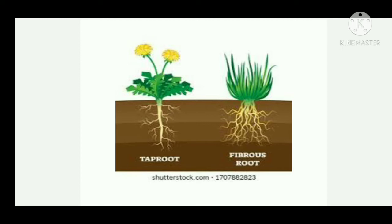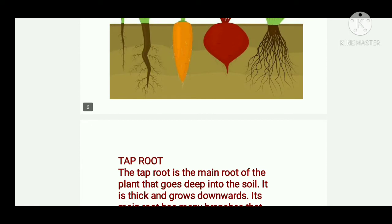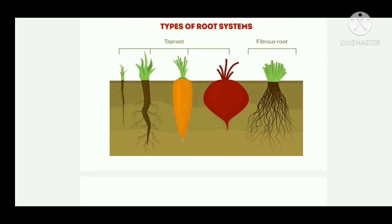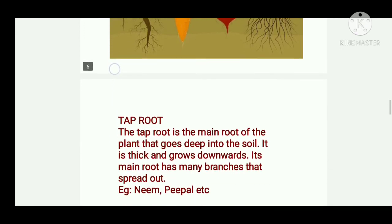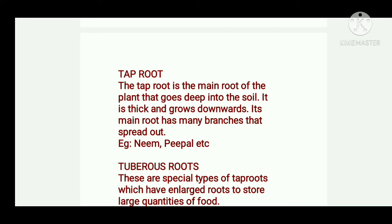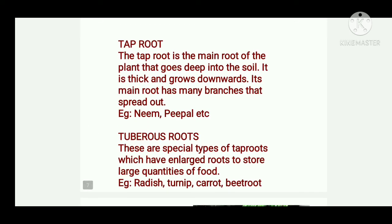Roots are mainly of two types. First is the taproot; the second is the fibrous root. You can see in this picture a taproot and a fibrous root. Let us first learn about the taproot. The taproot is the main root of the plant that goes deep into the soil. It is thick and grows downwards. Its main root has many branches that spread out.